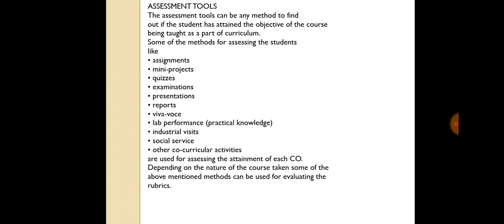The assessment tools used in attainment of course outcomes are assignments, mini-projects, quizzes, examinations, presentations, reports, viva, lab performance, industrial visits, social service, and other co-curricular activities. These tools are used for assessing the attainment of each course outcome. Depending on the nature of the course taken, some of the above mentioned methods can be used for evaluating the rubrics.